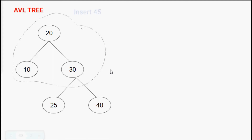Now we are going to insert a new node with value 45 into this AVL tree, following the binary search tree property: if a value is greater than the current node, place it as a right child; if less, place it as the left child. 45 is greater than 20, so it goes right. 45 is greater than 30, so it goes right. 45 is greater than 40, so it becomes the right child of 40.